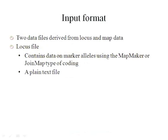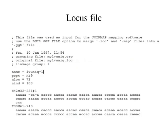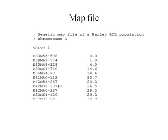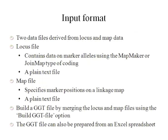The GDT program requires two data files: a LOCUS file and a MAP file. The LOCUS file contains the marker data using the MapMaker or JoinMap types of coding. Here is an example of the LOCUS file generated by using the JoinMap program. The MAP file specifies the marker position on a linkage map and is a plain text file. Here is the MAP file generated by the JoinMap program. If you have the physical location of the marker, you can create the MAP file based on that information.